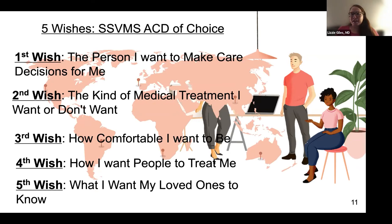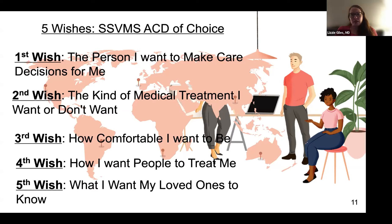Our group's recommendation is that the Five Wishes is a great advanced care directive — our top choice. I recently had a patient in her twenties who said this document made a lot of sense to her and she wanted to fill it out. The Five Wishes covers: the person you want to make care decisions for you, what kind of treatment you want, how comfortable you want to be, how you want people to treat you near the end of life, and what you want your loved ones to know. Patients really resonate with these questions.